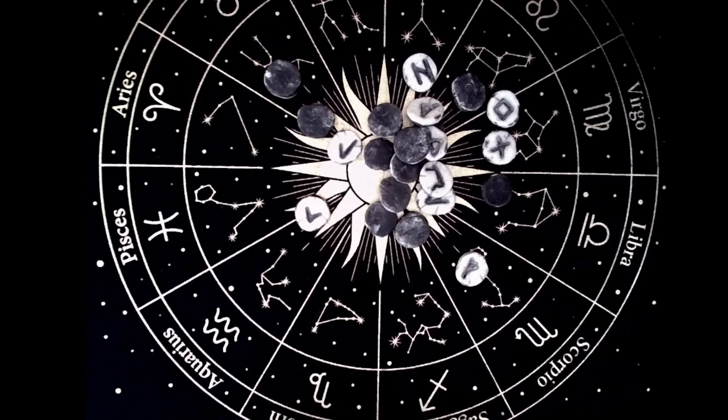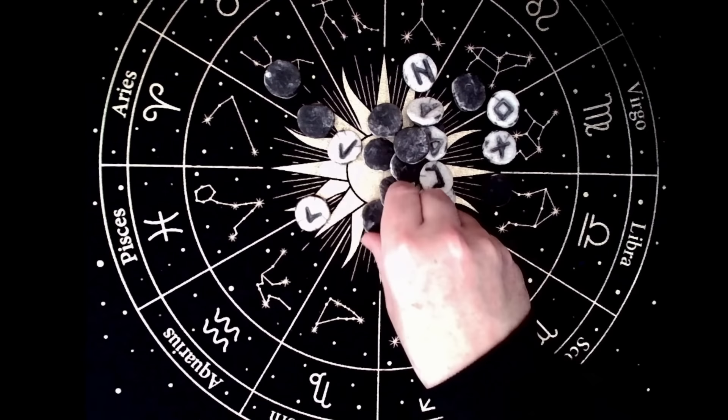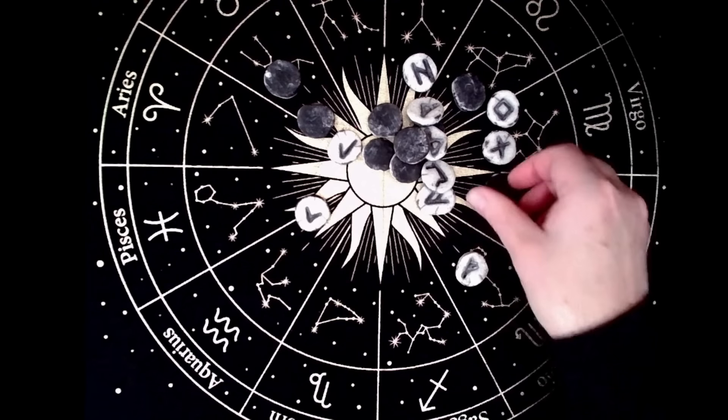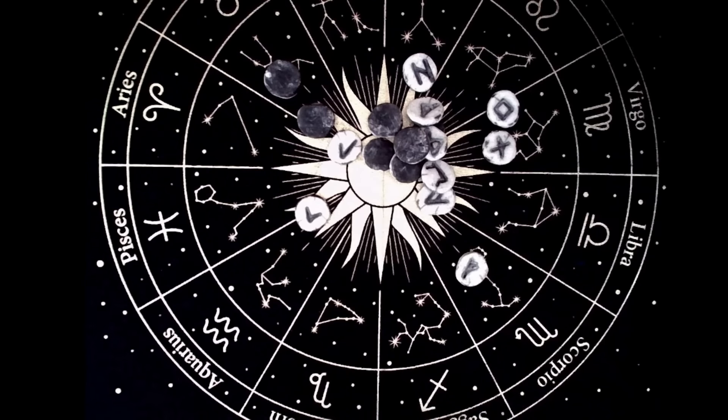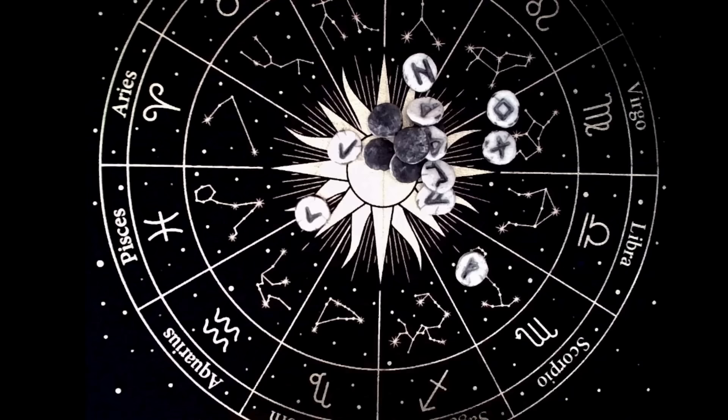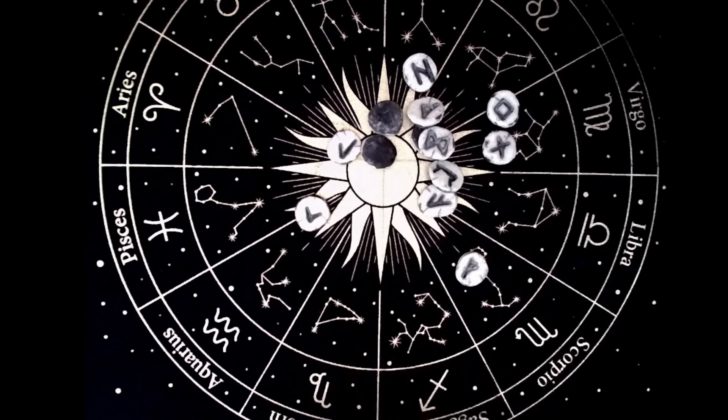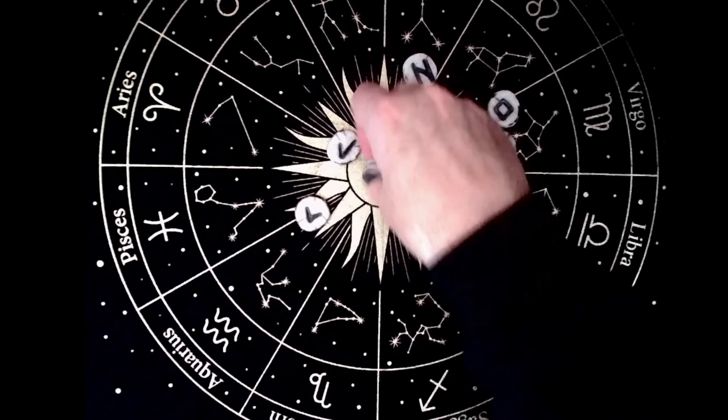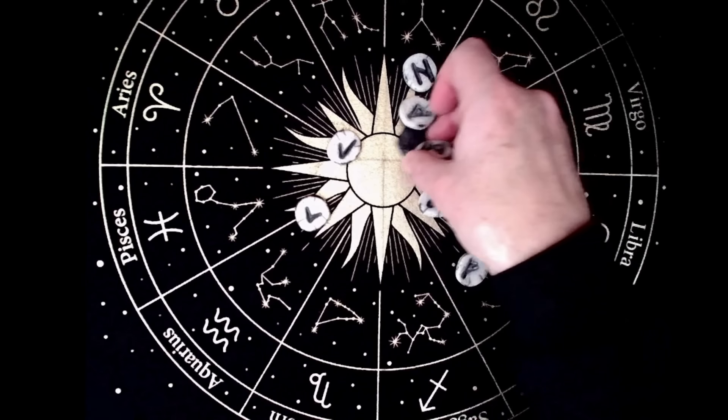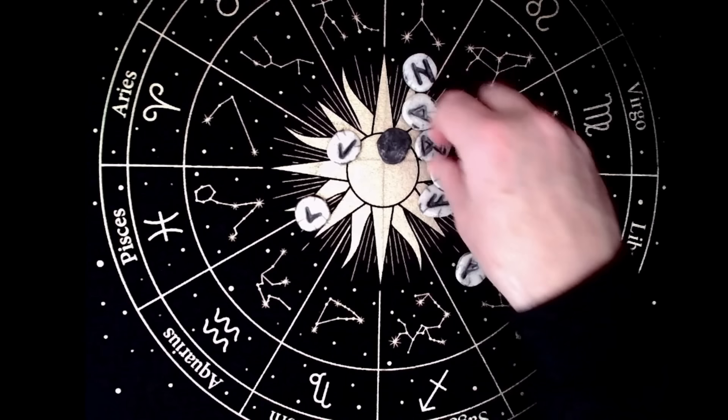Alors, même technique qu'habituellement, je retire les Runes qui se sont cachées. Alors ici, petit monticule de Runes. Quand on regarde, celle-ci était cachée, celle-ci était en ligne droite.